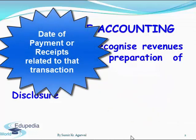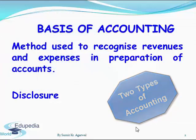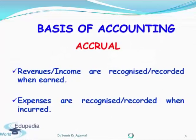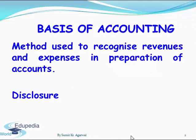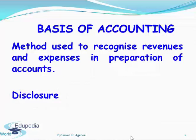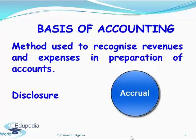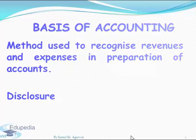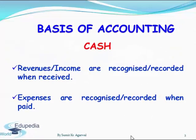Therefore, there are two types of accounting or basis of accounting: one is cash basis of accounting and the other is accrual basis of accounting. Whichever basis we choose for our accounting, we need to disclose it in our accounts. Please note that for certain categories of companies, preparation of accounts is mandatory only on the basis of accrual accounting.